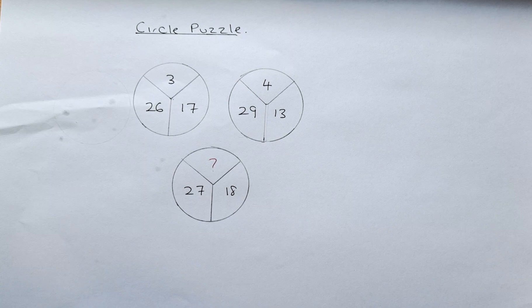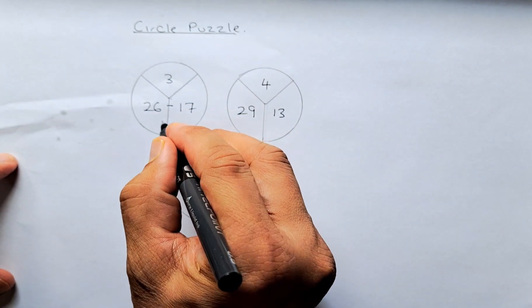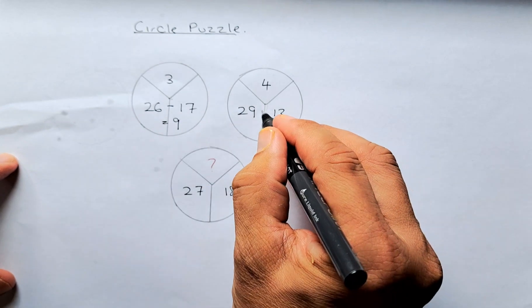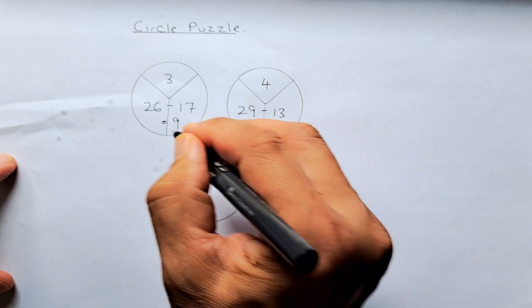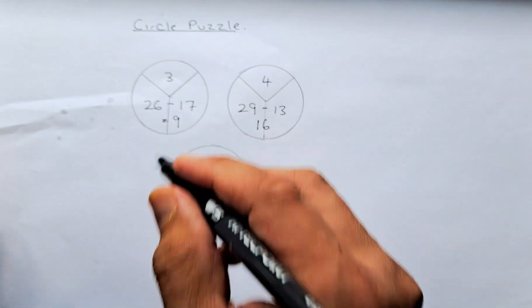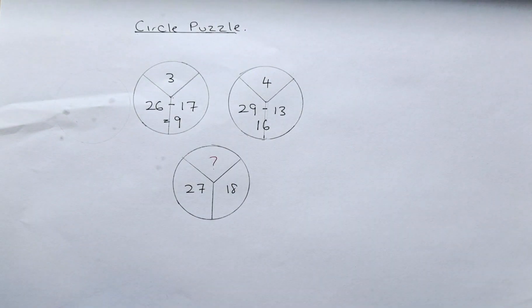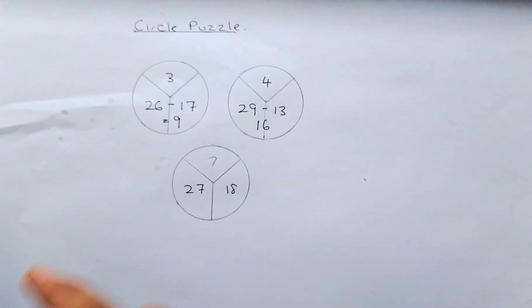So 26 minus 17 equals 9. 29 minus 13 is going to be 16. So you can see a pattern. The square root of 9 is 3, and the square root of 16 is 4.